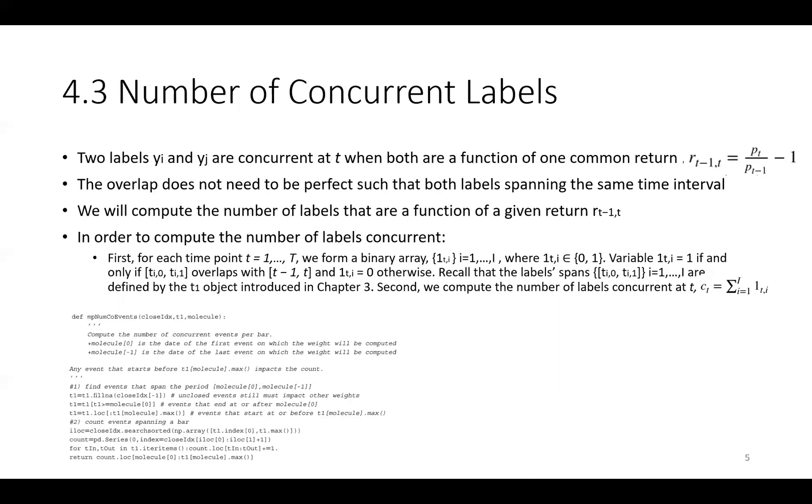Let's move to the number of concurrent labels. Two labels yi and yj are concurrent at t when both are a function of one common return. The overlap does not need to be perfect such that labels spanning the same time interval. We will compute the number of labels that are a function of a given return. In order to compute the number of labels concurrent, we follow the formulas in the book and also we have within a slide the codes for this problem.